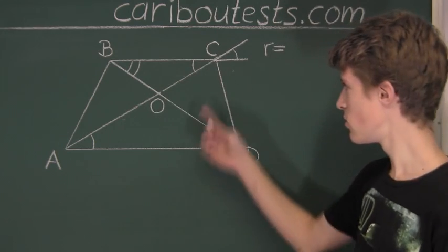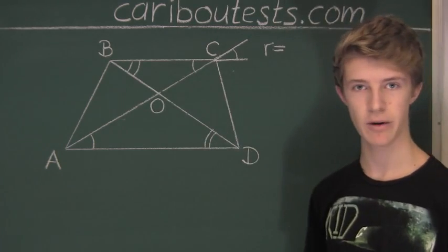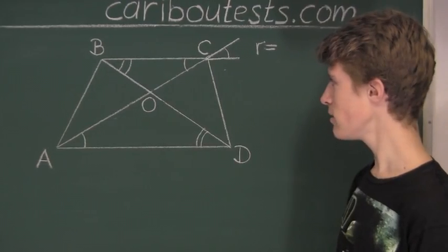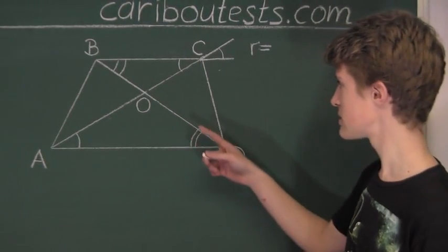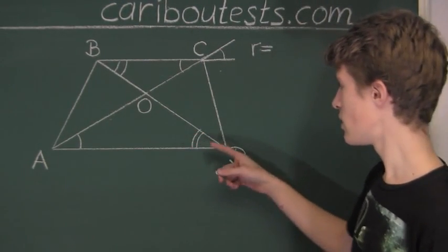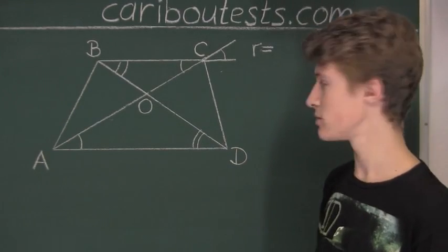So now the question is, what side lengths are corresponding between these two triangles? Well, there are always two corresponding side lengths, which are opposite to equal angles.